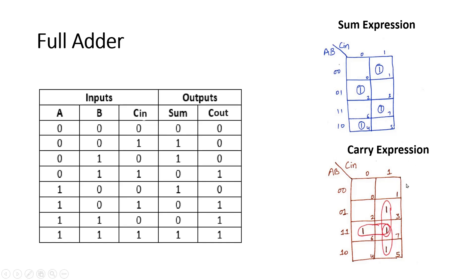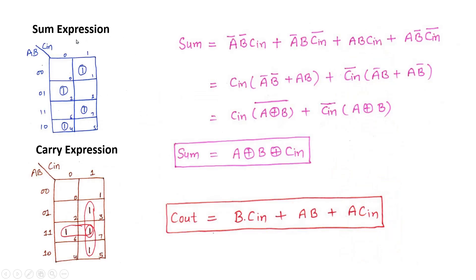Now let us see the final expression of sum and carry from these K-maps. From the sum Karnaugh map, for the first minterm: A-bar B-bar because both are zero and C-in is one, plus A-bar B and C-in-bar because C-in is zero, plus A B C-in, and for the last term A B-bar C-in-bar. Now you can take C-in common among the first two expressions, giving C-in times (A-bar B-bar plus A B), and C-in-bar times (A-bar B plus A B-bar).